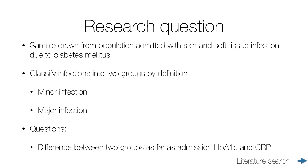We're going to classify these infections into two groups. We need a definition — we don't have to be rigorous here; we just want two groups to compare. We'll call them minor infection and major infection. Minor infections would be patients admitted short-term, receiving local dressings on their skin infection and oral antibiotics. Major infection would be defined as requiring intravenous antibiotics or some form of surgical intervention — cleaning the wound surgically. In proper medical research, these definitions must be very precise, but here we have two groups to compare across various variables.